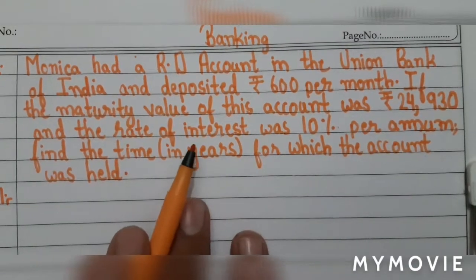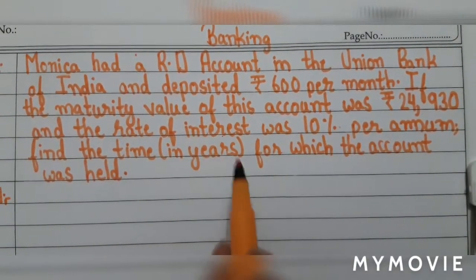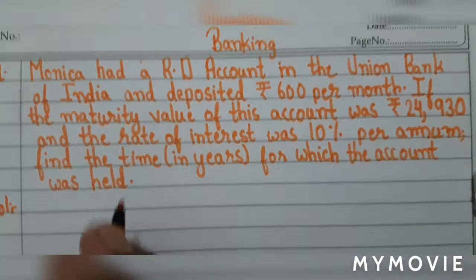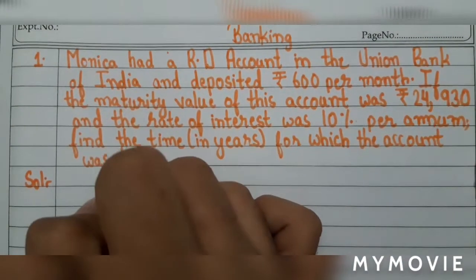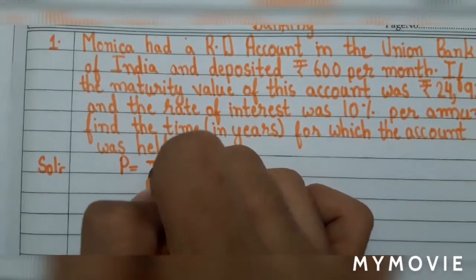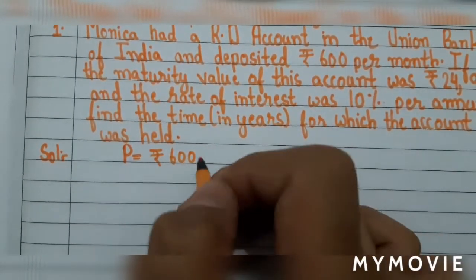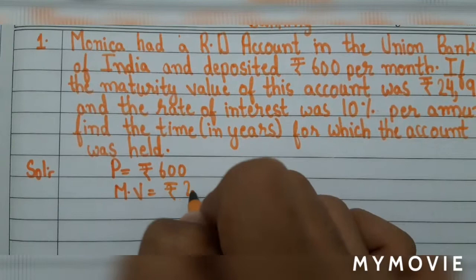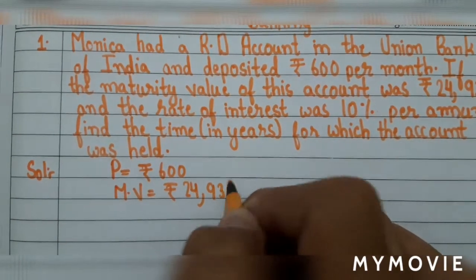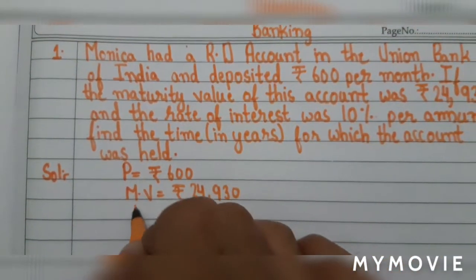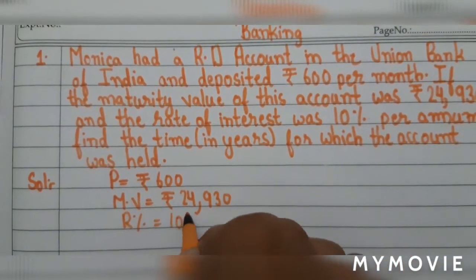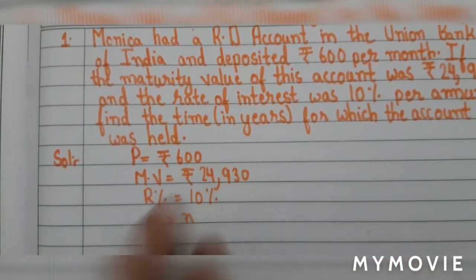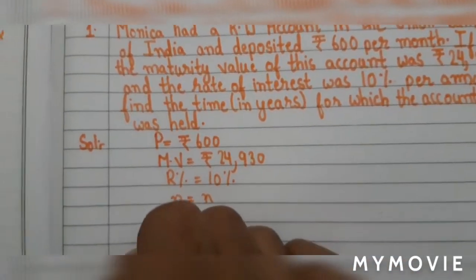We should calculate the time in years. First we should calculate the time in number of months, then convert the number of months into years. Let's do the solution. The deposit is rupees 600 per month, so our principal P is 600. The maturity value is 24930, the rate is 10%, and we don't know the time, so let's take n as the unknown.